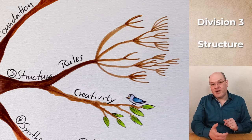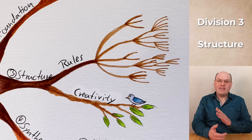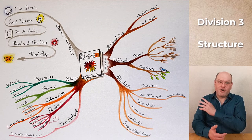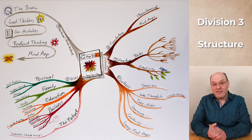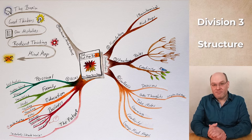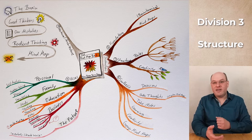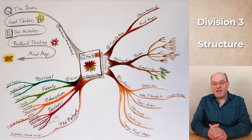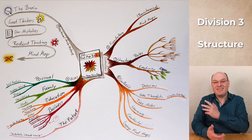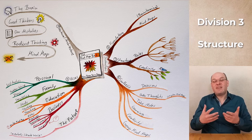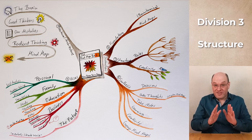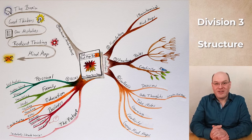I should note that I did not strictly follow all the rules in my own mindmap. For example, there is a rule that the length of branches should correspond to the length of the words written on them. As you can see, I frequently wasted space by making branches far longer than necessary. So my mindmap is clearly not intended as a prime example of strictly following all the rules.